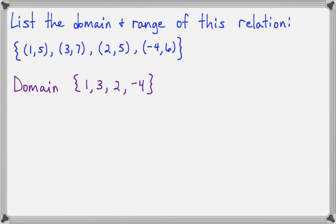So the domain will be 1, 3, 2, negative 4. And I happen to list these in the order that they came in this list, but really any order is fine. You could put largest to smallest, smallest to largest, and the order is not important at all.